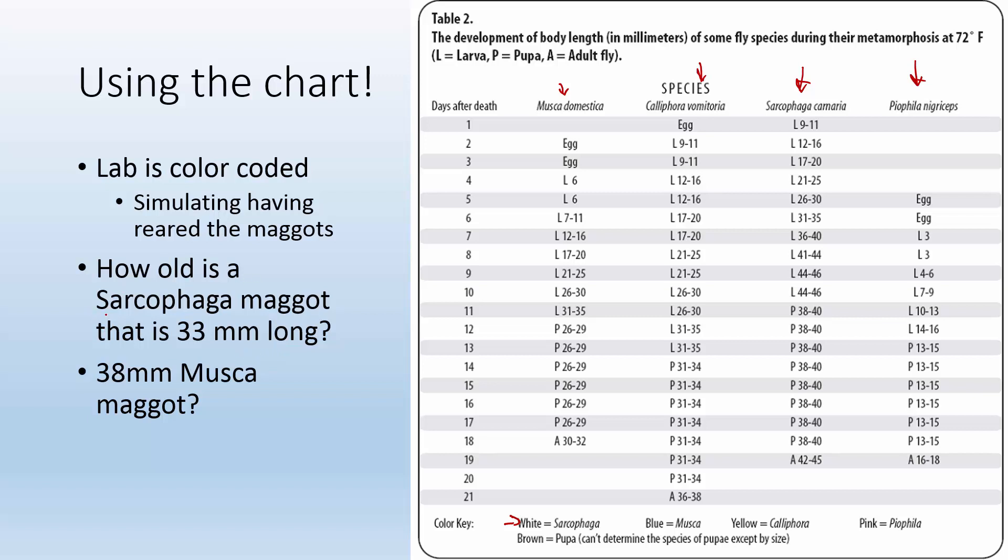How old is a sarcophaga maggot that is 33 millimeters long? So I find sarcophaga and look, it says L for larva, down here it says P for pupa, and down here it says A for adult. So I know that it's a maggot or a larva that's 33 millimeters long, so it would fall right here. So I look over, that's about six days after death, so I go, boom, about six days.